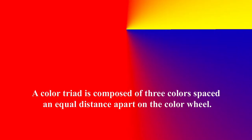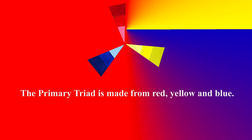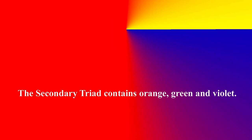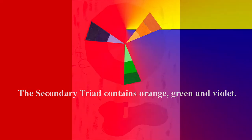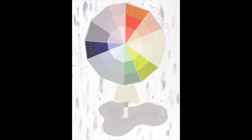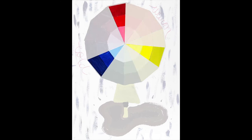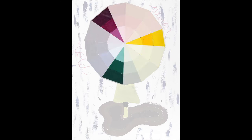A color triad is composed of three colors spaced an equal distance apart on the color wheel. The primary triad is made from red, yellow, and blue. The secondary triad is made from orange, green, and violet. Here's a look at some of the triads to be found using the color wheel.